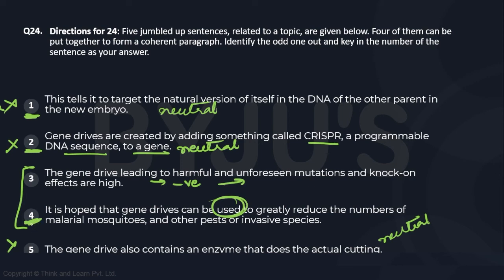Sentence 3 will probably come in a later paragraph. Sentence 4 still fits here because we first describe what gene drive is, explain how it works, and then talk about the hoped uses. So sentence 4 is more in line with the passage than sentence 3, which digresses. This could be slightly tricky — I'd call it moderate difficulty. Sentence 3 is the odd sentence out.